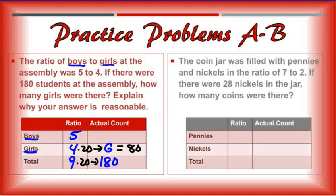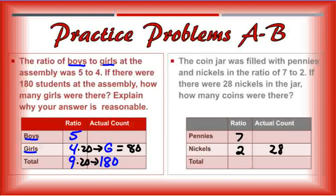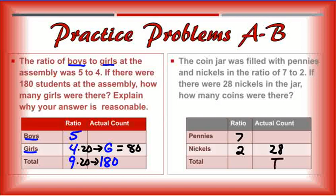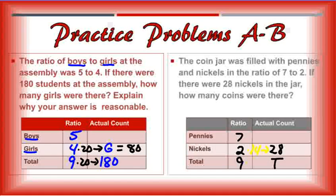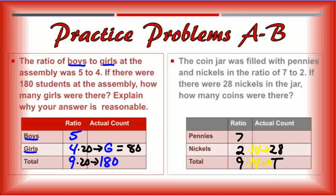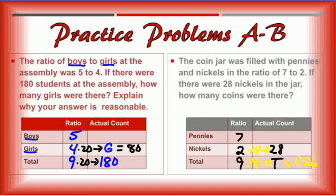And the other one here, the coin jar was filled with pennies and nickels in the ratio of 7 to 2. So seven pennies, two nickels. If there were 28 nickels in the jar, how many coins were there? So we need to find the total. Seven plus two is nine. So I need to find the total. I know 2 times 14 gives me 28. So 9 times 14 gives me the total. Fourteen times nine equals 126. So that would be 126 total coins.